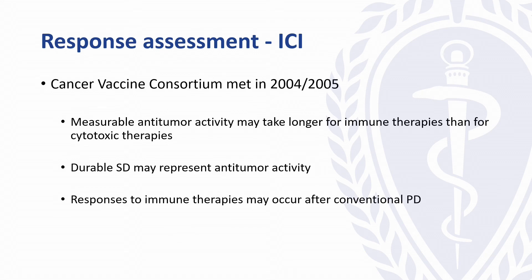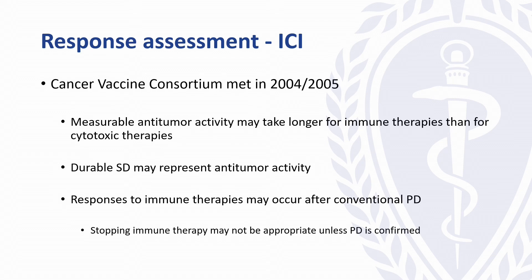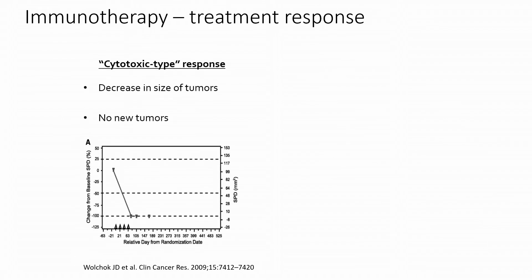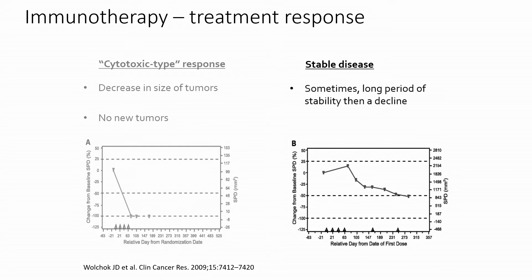Possibly the biggest difference was that we can see a response to immunotherapy after a period of conventional progressive disease. Because of that, stopping the immunotherapy may not be appropriate until we can be sure that that progressive disease is real. In that same paper, they outlined a few different patterns of response — the first being a cytotoxic pattern, just an immediate decrease in tumor burden that's easy to pick up on imaging. The second being a relatively long period of stable disease with a slow reduction in tumor burden.